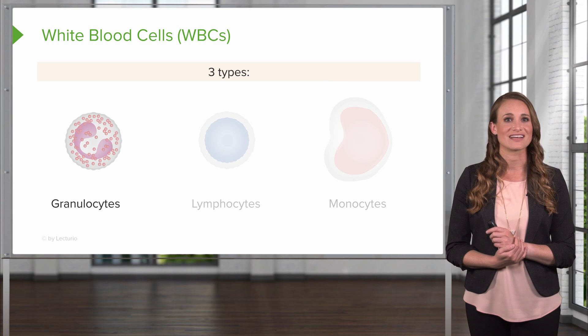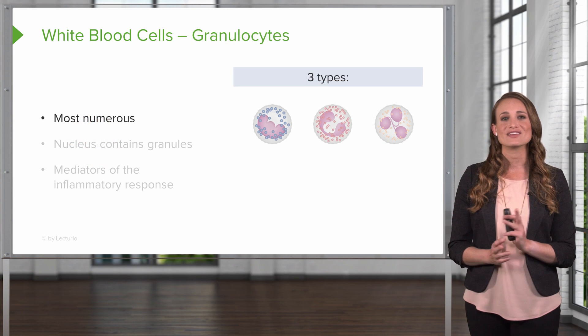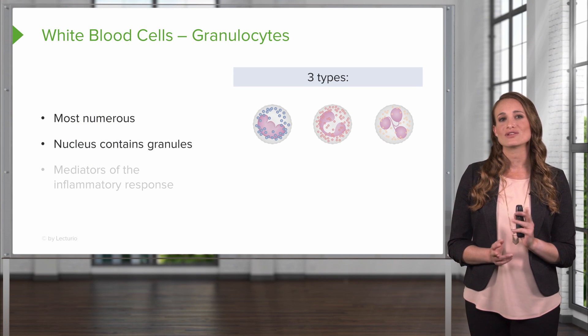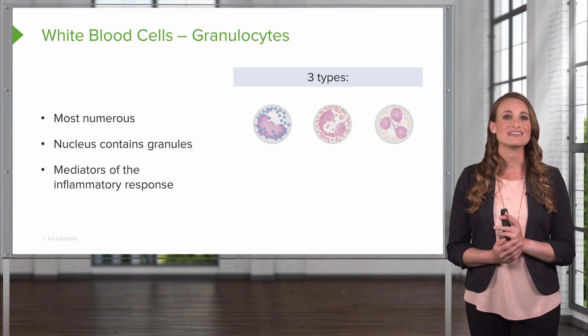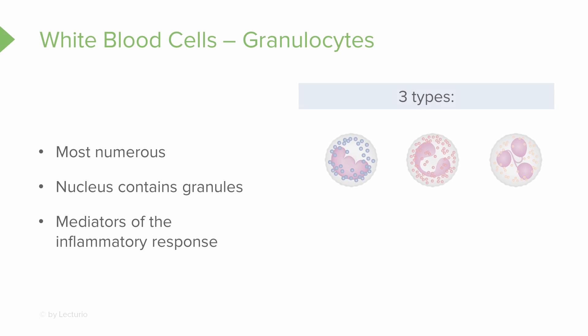First, the granulocytes. These are the most numerous. The nucleus is going to contain granules, and this is where they get their name, and these are the mediators of our inflammatory response. Basophils are the least common of these granulocytes, and they can perform phagocytosis. They can produce histamine and serotonin, and these cells play a role in immune regulation and allergic responses.